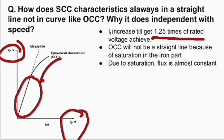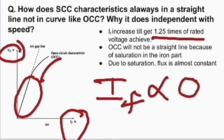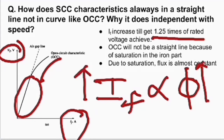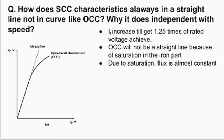Before saturation, field current is directly proportional to flux — if field current increases, flux also increases. After saturation, flux is almost constant regardless of how much field current you increase; whatever field current you put into the winding, it doesn't matter. We will study two conditions: what happens before saturation, and what changes occur after saturation.